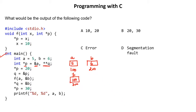Next we create a double pointer Q. A double pointer holds the address of a single pointer. Let the name of this box be Q, let its address be 400. Q will hold the address of single pointer P, because Q is a double pointer.